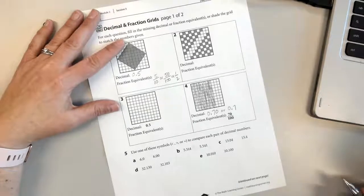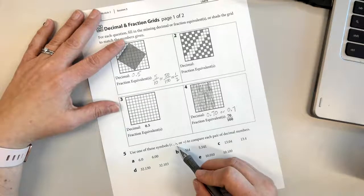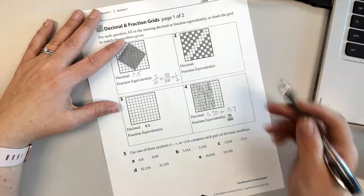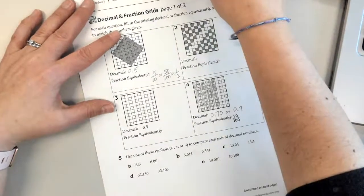Looking at number five, we're supposed to use the symbols less than, greater than, or equal to, to compare each pair of decimal numbers. I'm going to zoom in a little bit for you on that, make it a little easier to read.